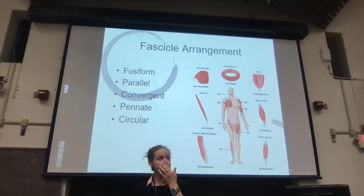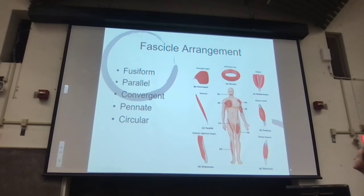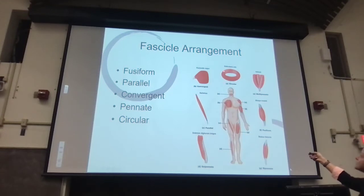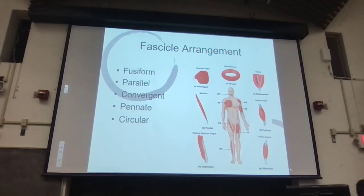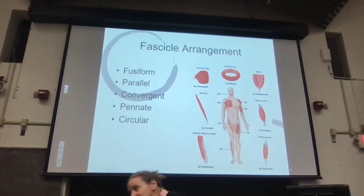Skeletal muscles can have different fiber arrangements and different names, but at this point you don't need to memorize them. We can just observe: look at the orbicularis oris — the muscle around the mouth — its fibers are in a circular shape, which benefits the motion it performs. We can look at the pectoralis major or latissimus dorsi; they're convergent — the fibers come to a narrower point. The muscle fibers can be arranged differently, but you don't need to know these.